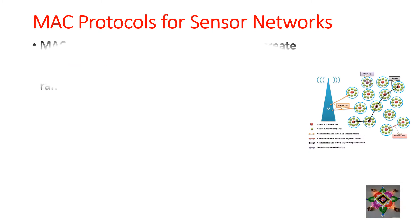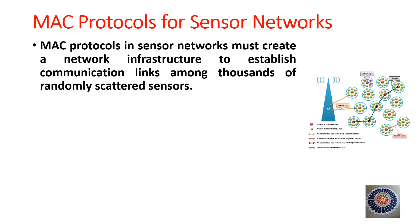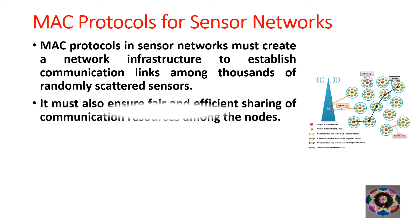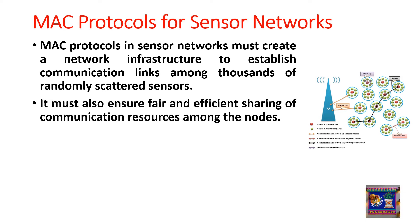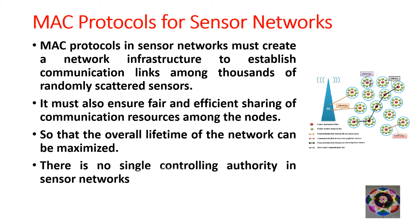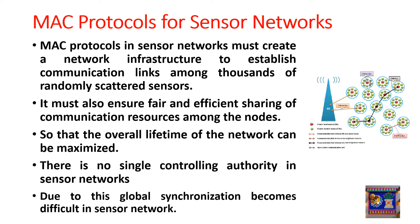MAC protocols in sensor networks must create a network infrastructure to establish communication links among thousands of randomly scattered nodes. They must also ensure fair and efficient sharing of communication resources among the nodes, so that the overall lifetime of the network can be maximized. There is no single controlling authority in sensor networks, which makes global synchronization difficult.